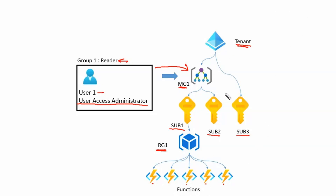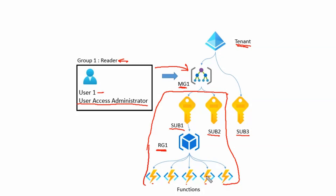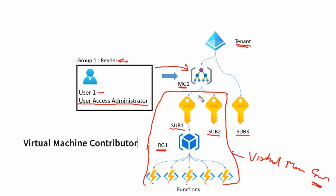Further, we assign User1 the Virtual Machine Contributor permission for Subscription1 and Subscription2 and everything under them. This means User1 can create and manage virtual machines for Subscription1 and Subscription2, and therefore under Resource Group1 as well.